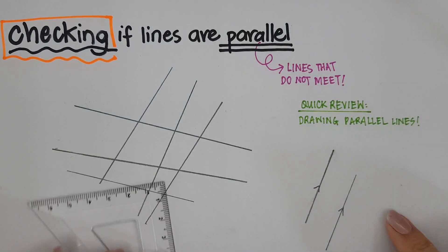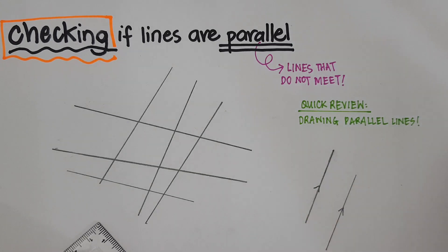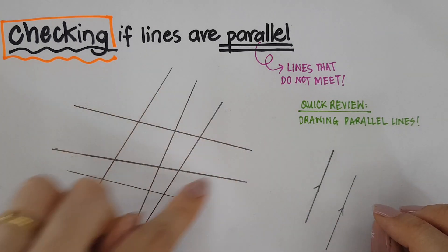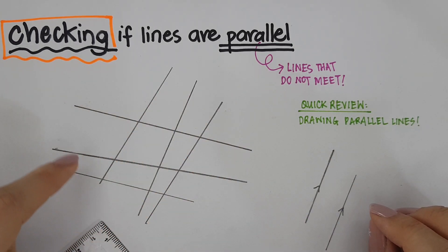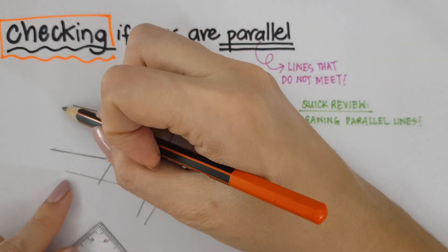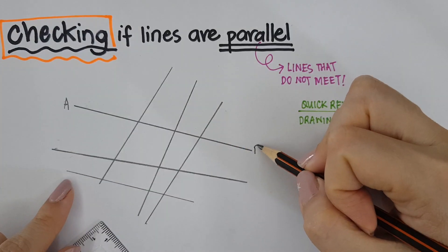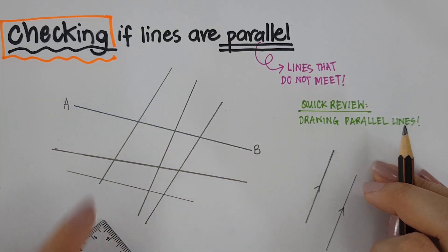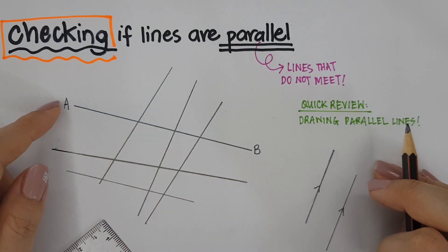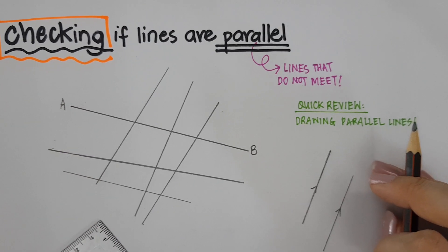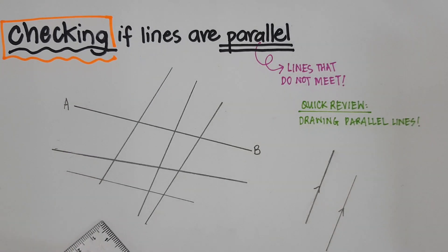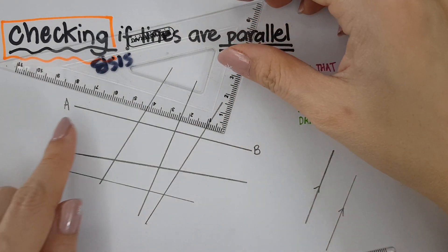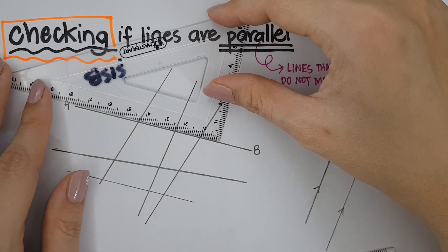So if you know how to draw lines, you can definitely check for lines. Let's say I have a whole lot of lines here — there are six lines here — and I want to check which line is parallel to line AB. Now some of you can just use your eyes, but that is not exactly accurate.